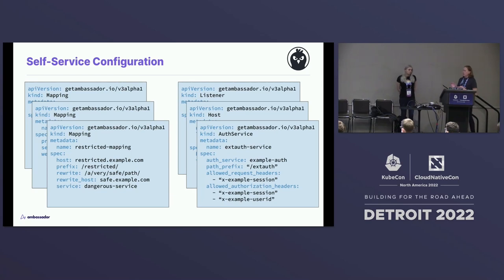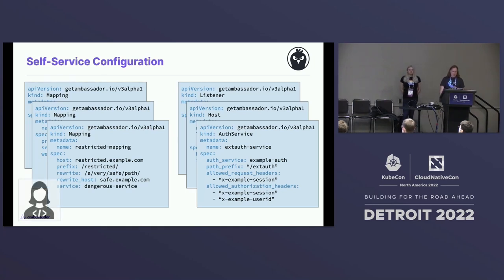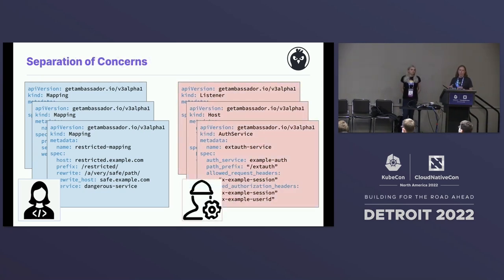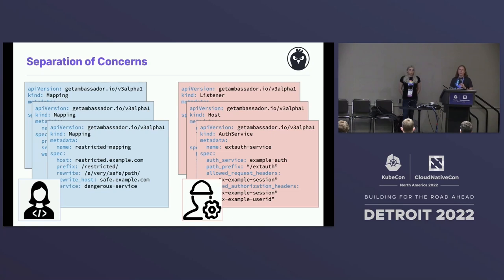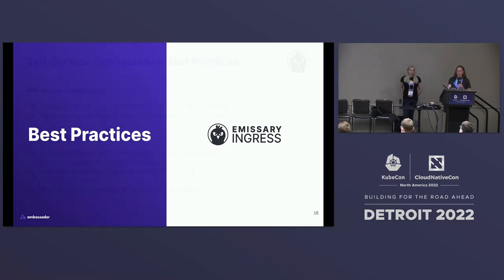One of the things that's nice about this particular configuration language is if you separate out the mappings from the infrastructure side, you also get to separate those roles as people are working in operations. You can do all of this with just one person dealing with all the mappings, listeners, hosts, authentication service, rate limit service, and everything else. But it's very easy to separate this into two roles or more — developers of your application worrying about mappings, and separate people filling the more ops-centric role worrying about the more infrastructure-oriented things. This has been baked into Emissary literally since the start in 2017, and it has been very important for a bunch of the adoption we've gotten.